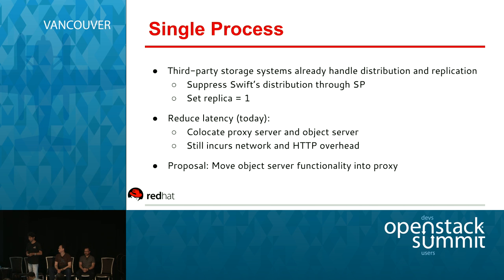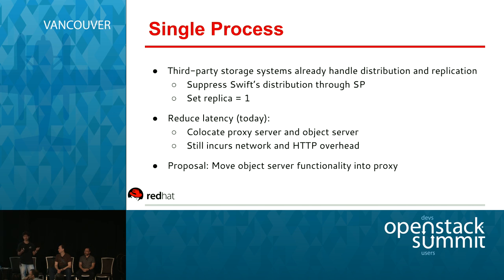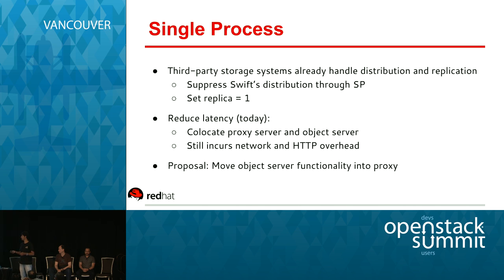We hard-code replication as one when building the ring files to suppress replication. In this setup, the hop between proxy and object server is not really necessary. As of today, the only way to reduce latency is to co-locate proxy and object on the same node — but they still run as two different processes. The client request that proxy accepts is still forwarded to the object server over the network, incurring network overhead and HTTP overhead. The proposal is simple: move the object server functionality into the proxy and run as a single process.